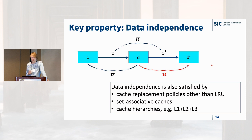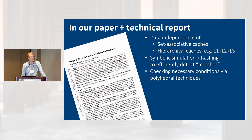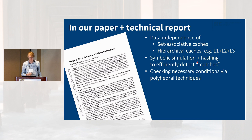The nice thing is that data independence is also satisfied by other cache replacement policies, not just LRU. We analyze in the paper how it applies to set-associative caches — there are some restrictions, but we can work with those. It also applies to arbitrary cache hierarchies. We also look into how to symbolically simulate behavior to efficiently detect pairs of states for which such bijections exist, and how to use polyhedral techniques to determine how far warping can be applied.